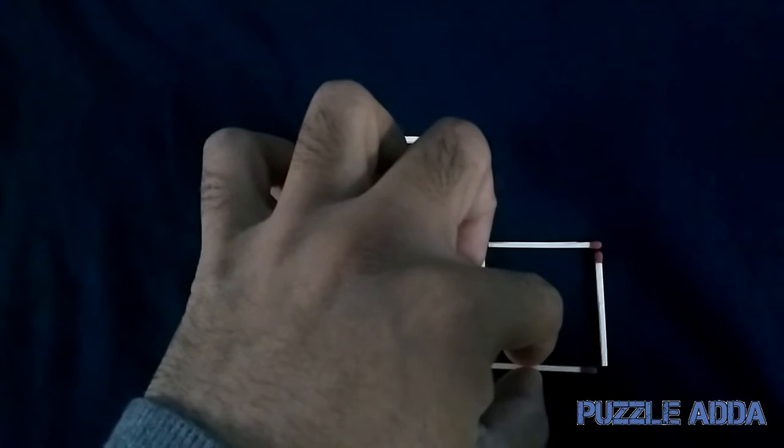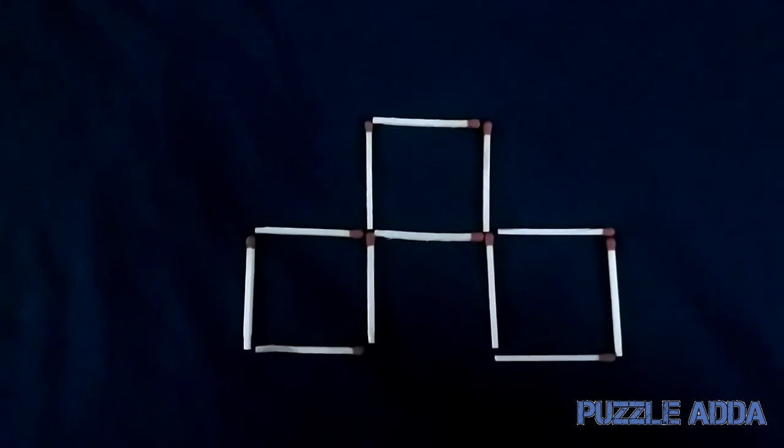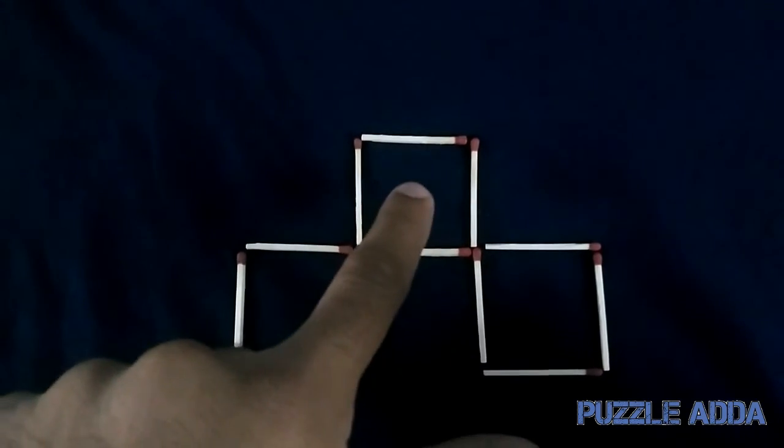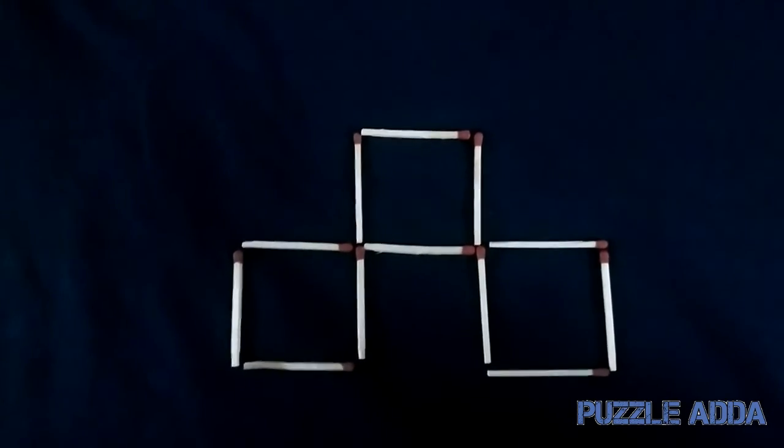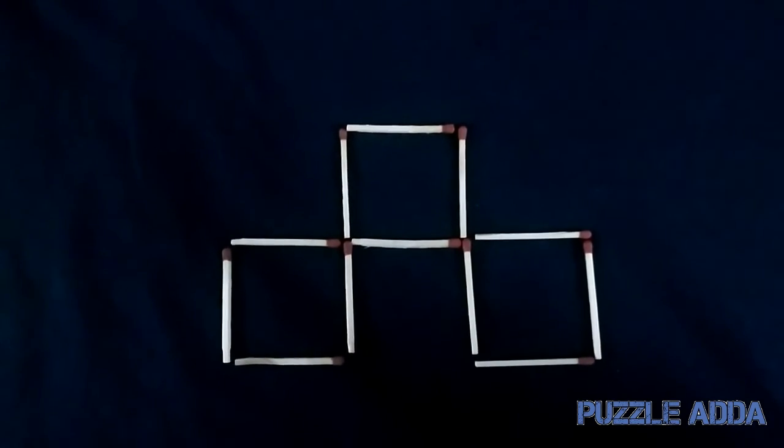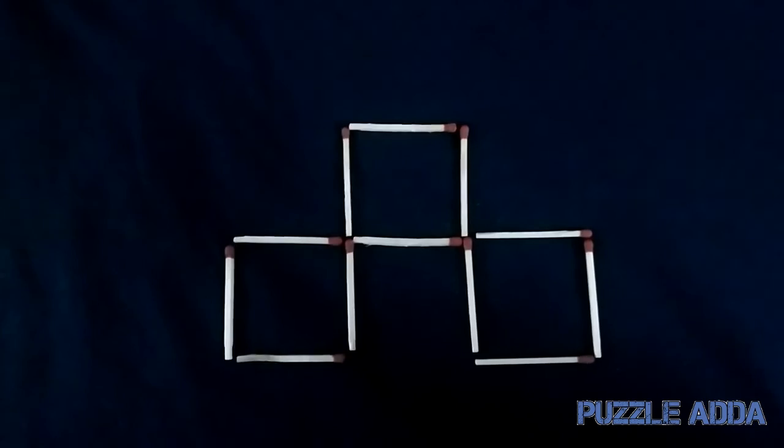This will make the figure as three squares: one, two, and three. So this is the solution of this puzzle. We have moved only three matchsticks and we have made three squares.